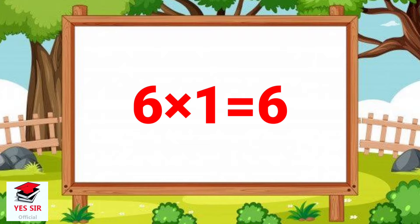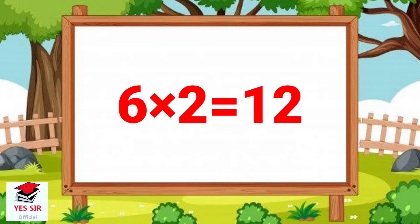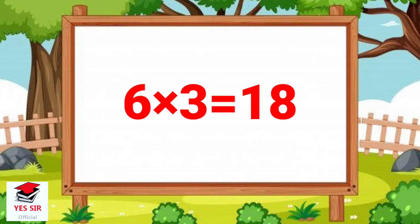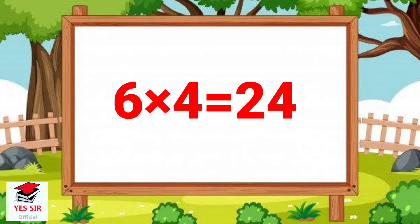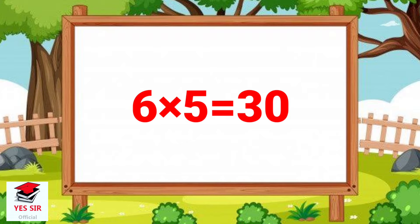6 and 1 is equal to 6. 6 and 2 is equal to 12. 6 and 3 is equal to 18. 6 and 4 is equal to 24. 6 and 5 is equal to 30.